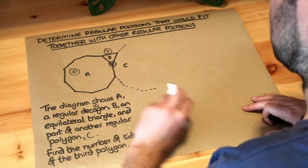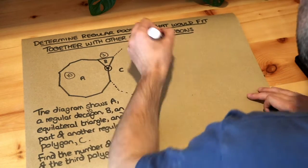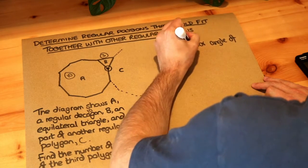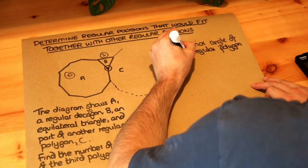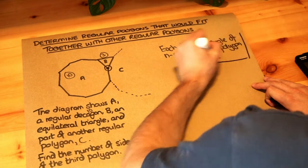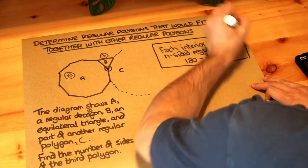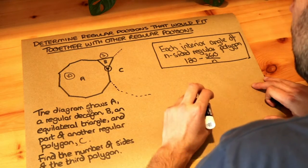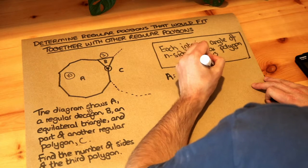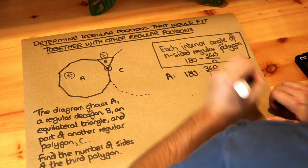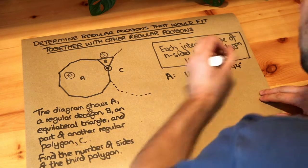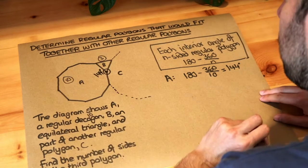Now let's work out the interior angle here of the decagon first, and remember that each interior angle of an n-sided regular polygon, the formula was 180 subtract 360 divided by the number of sides, so we can just use that formula again. I'm not going to explain again how that works, but for A the interior angle was 180 minus 360 divided by the number of sides, which is 10, so that's going to be 180 minus 36, which is 144 degrees, so let's just put that on the diagram. That interior angle here is 144 degrees.